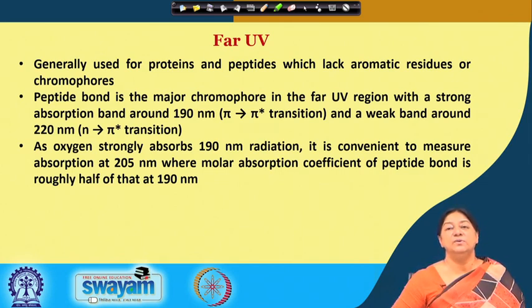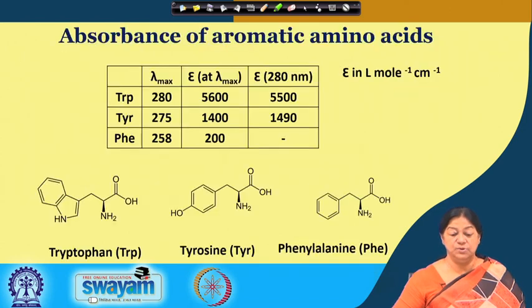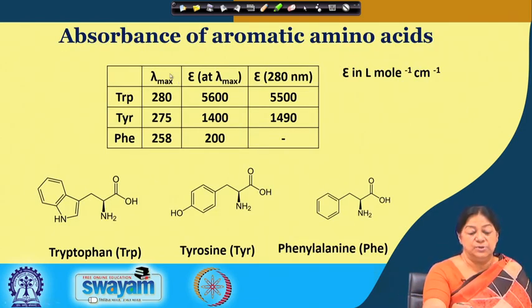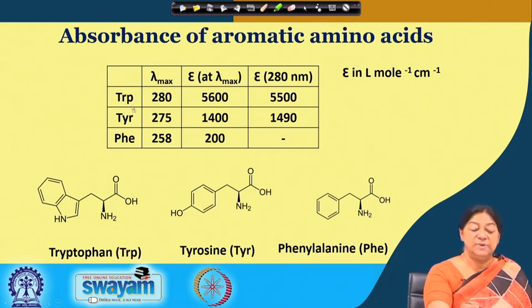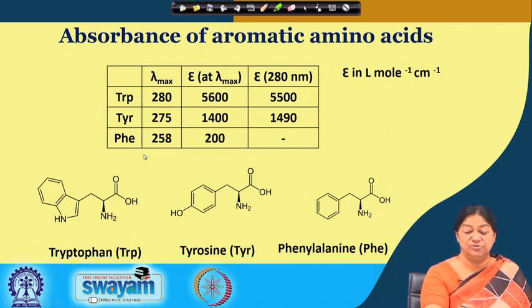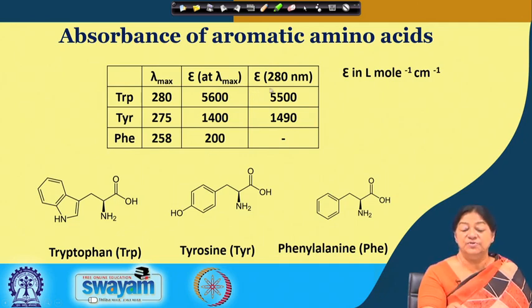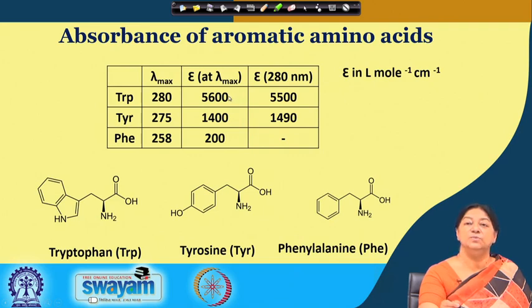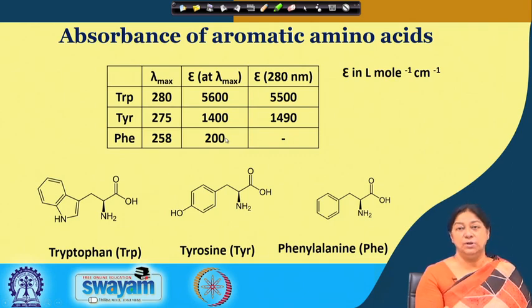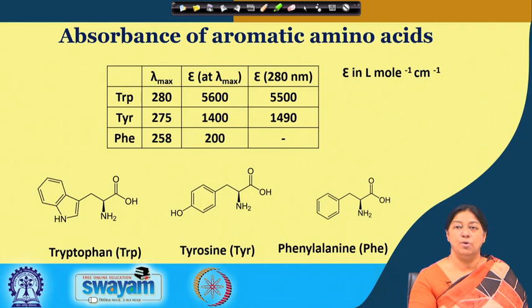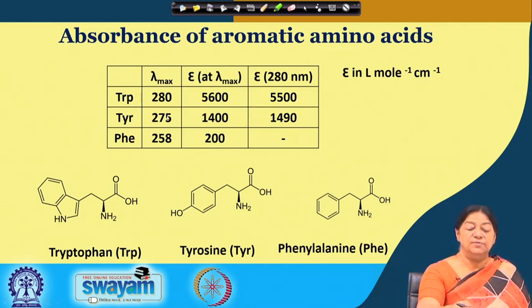Aromatic amino acid residues have a specific absorbance with a specific extinction coefficient. We have the lambda max — the maximum wavelength at which the specific amino acid absorbs light. We also have the molar extinction coefficient at the lambda max and at 280 nanometers. Tryptophan has the highest molar extinction coefficient, meaning that if a protein has a large number of tryptophan residues, it will absorb a large amount of light. Tyrosine and phenylalanine are weaker chromophores compared to tryptophan.